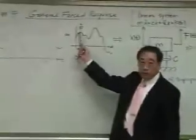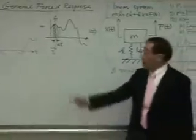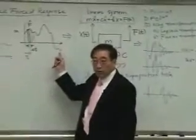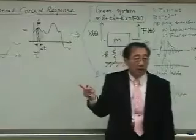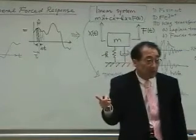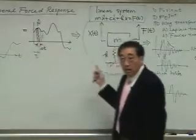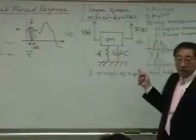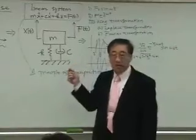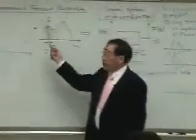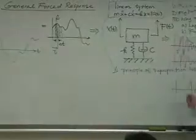If I know the response due to this excitation, then, because this general force can be expressed by the superposition of those rectangular box-type excitations, and I do know the response due to this box-type excitation, and having in mind that this system is a linear system, then I can get the response of the whole - this general excitation would be a superposition of those responses.